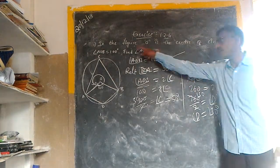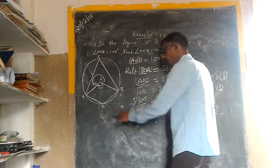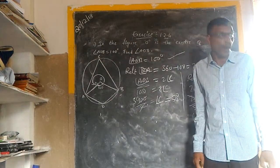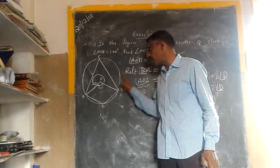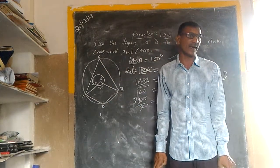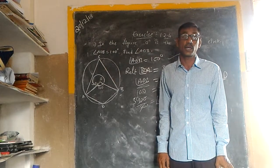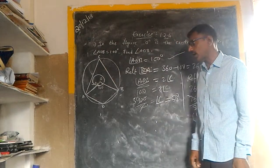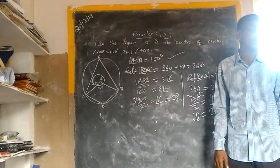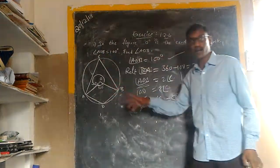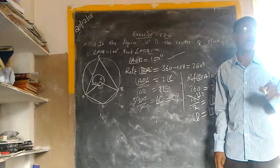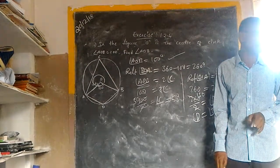We say that four points on a circle form a cyclic quadrilateral. In a cyclic quadrilateral, the sum of opposite angles must be 180 degrees. So angle C plus angle D always equals 180 degrees.